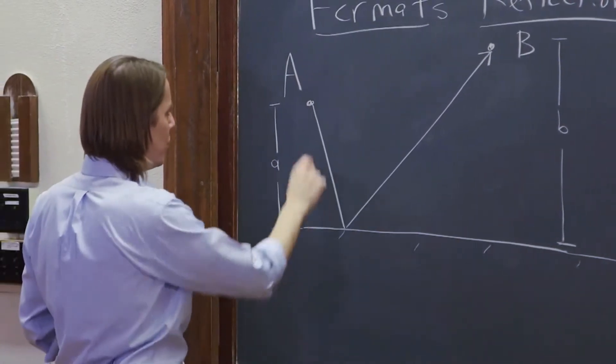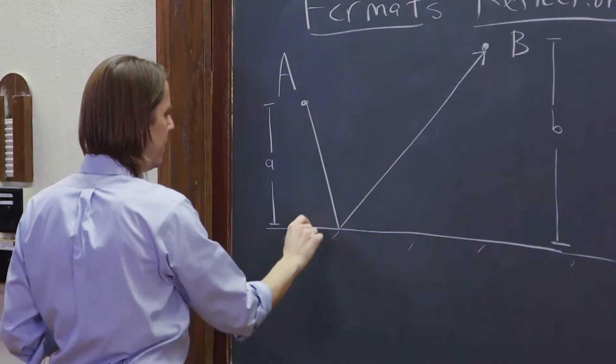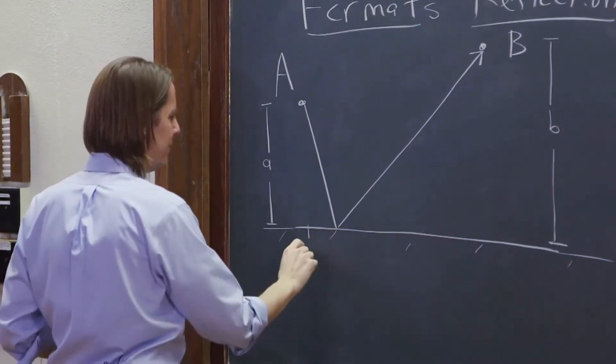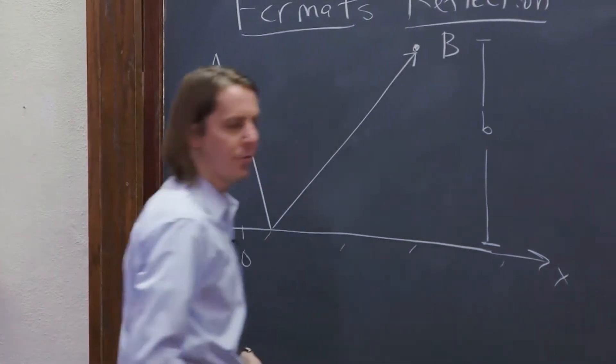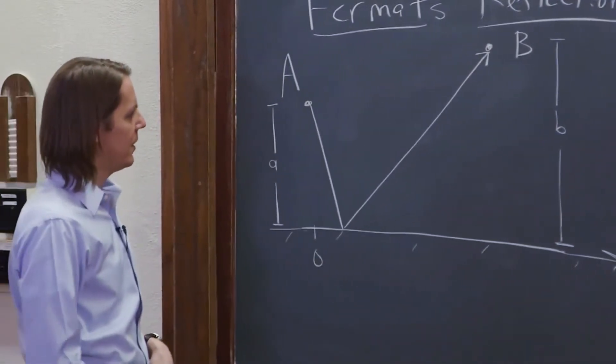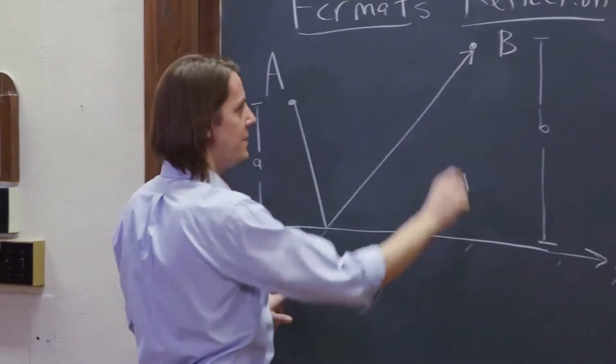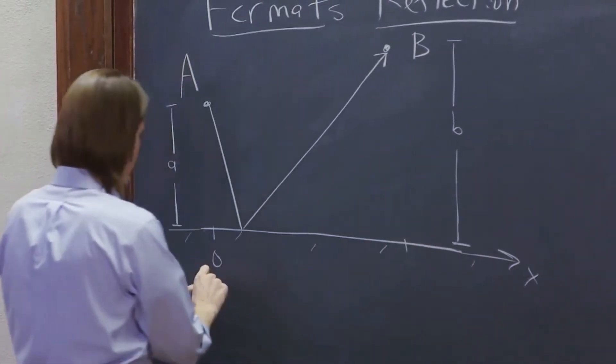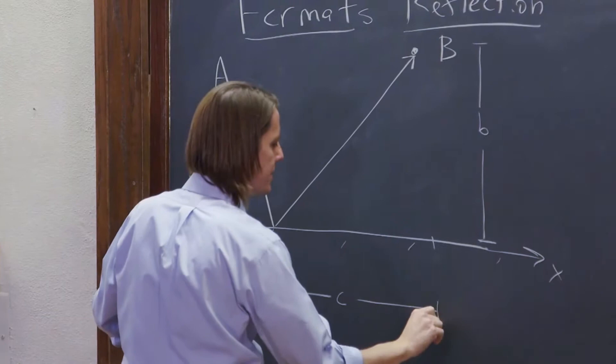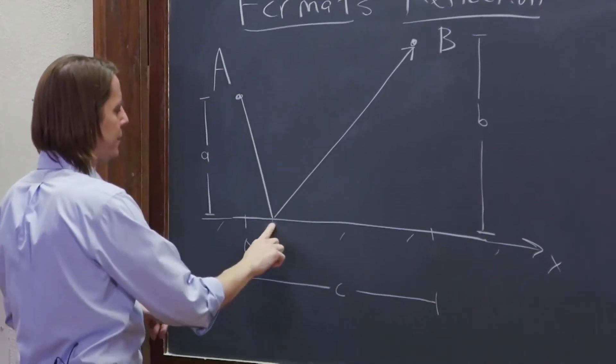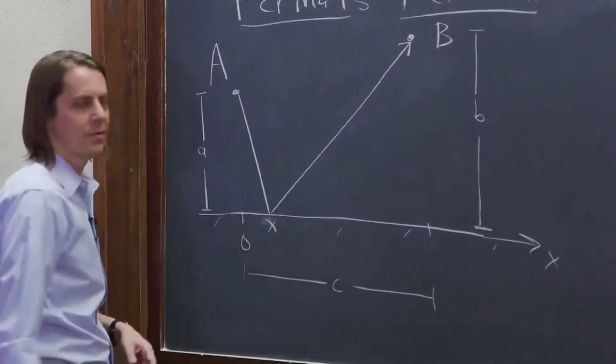And now we also, one more coordinate system to think about is we have the height here. So we want to think of an x-axis here, where this is zero. We'll just think of the surface as an x-axis, and this distance is C. So the width between the two points is C, and we're reflecting at some point x.